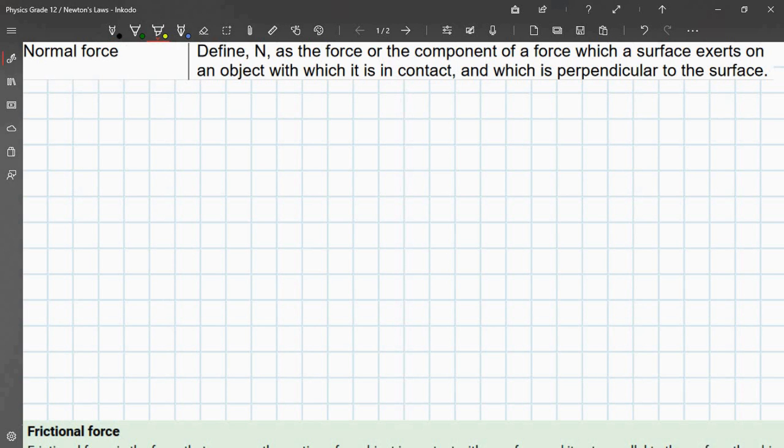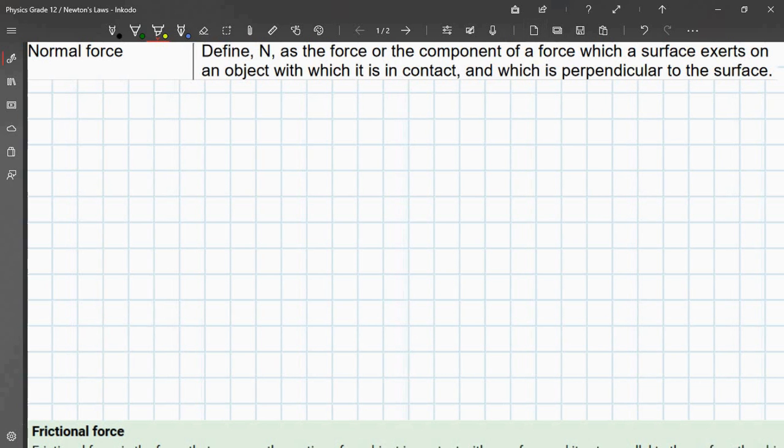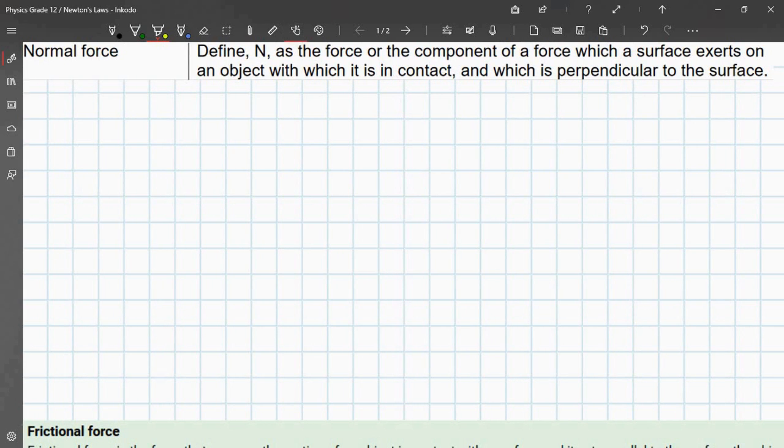So the key words in this definition that markers will be looking for and that you should really be paying attention to is it's a force which the surface exerts on an object. So it's a force which the surface exerts on an object and it is perpendicular to the surface. So if I just have to draw a quick sketch or a diagram,